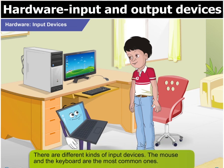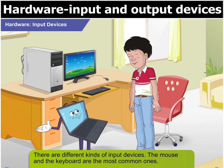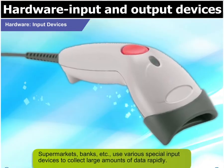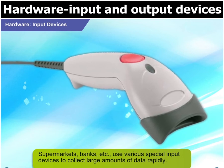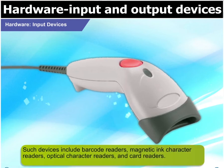Well done. Now there are different kinds of input devices. The mouse and the keyboard are the most common ones. Some others have specialized uses. For example, supermarkets, banks, etc. use various special input devices to collect large amounts of data rapidly. Such devices include barcode readers, magnetic ink character readers, optical character readers and card readers.